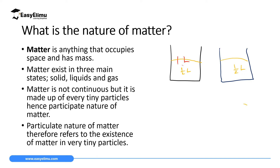Now, what if your friend gets another friend who also needs the juice and has a cup? That friend can divide the half liter into two, giving a quarter liter each. A juice is an example of a liquid, and a liquid is an example of a state of matter. So it means liquids, which is matter, can be divided into small portions.